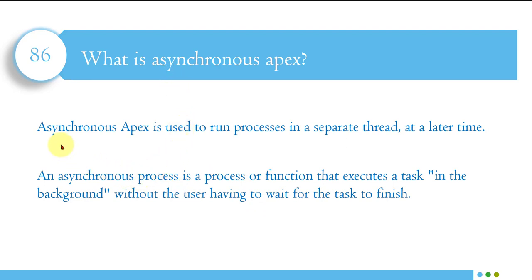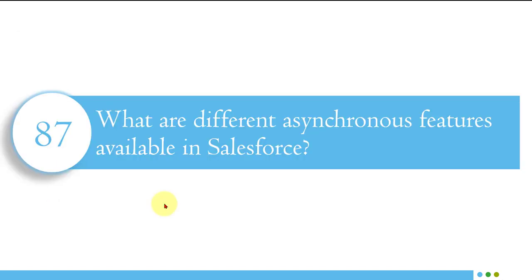Asynchronous apex is not like that. If I connect a save button to a future method — which is an asynchronous method — then that will run on its own time. You will not get the result immediately. Synchronous is something which runs immediately, and asynchronous runs on its own time. It depends on how busy your org resources are. If resources are free it may run within seconds, but if something else is running it will wait until resources are available.